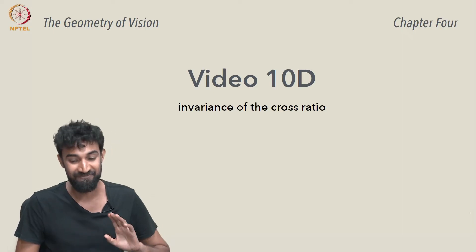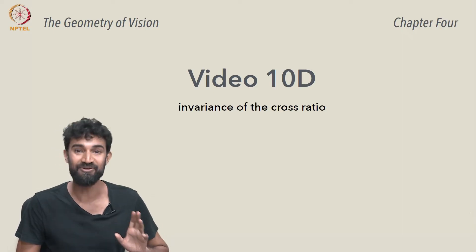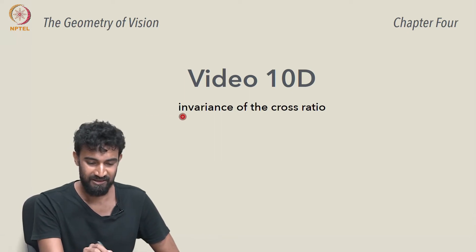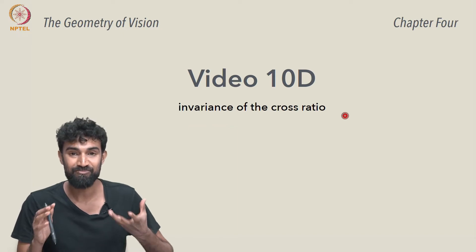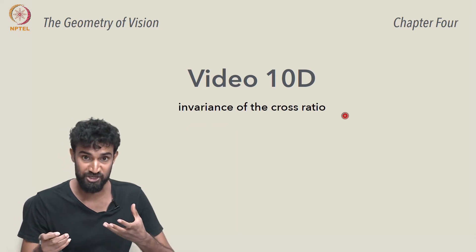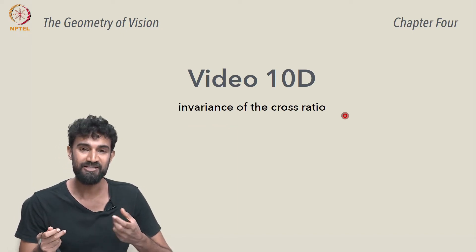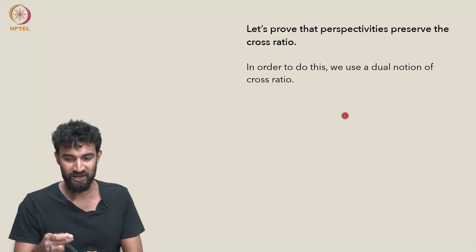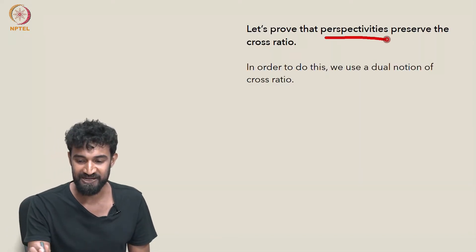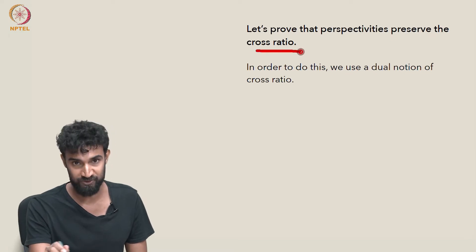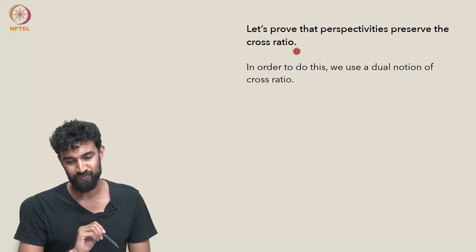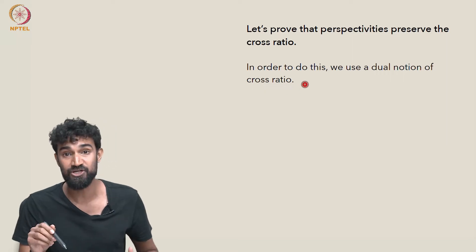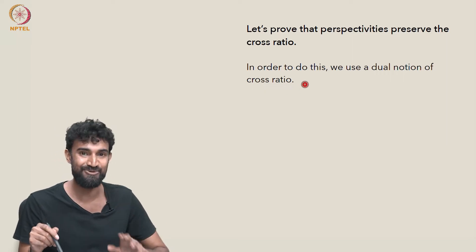Let's turn our attention now to the invariance of the cross-ratio. This is the theorem or property that tells us that the cross-ratio is preserved under changes in perspective. Another way of saying that: perspectivities preserve the cross-ratio. In order to do this, we want to use a dual notion of the cross-ratio that I'm going to introduce now.